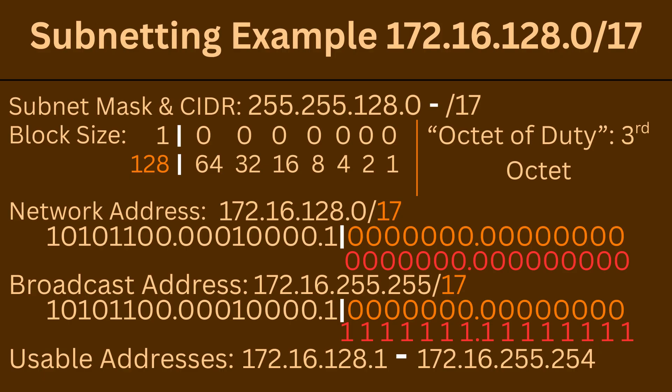In this example, we will subnet 172.16.128.0 /17. The subnet mask is 255.255.128.0. The first two octets belong to the network ID, which is 16 bits — 8 bits for each octet. We need one more bit, which means the bit we borrowed from the third octet is 128, as indicated by our place value chart. CIDR notation /17 — as indicated by the prefix, block size is 128. We borrowed one bit from the third octet, which is the octet of duty, and that bit is equal to 128, as indicated in the place value chart beneath it, highlighted in orange.